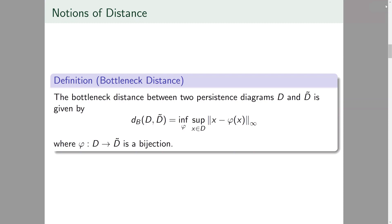The first of these is the bottleneck distance which calculates the infimal cost of moving points in the L infinity metric or the supremum coordinate shift at any point.